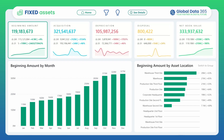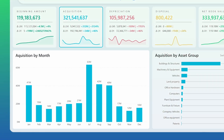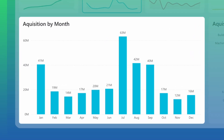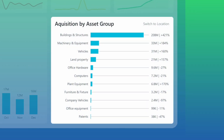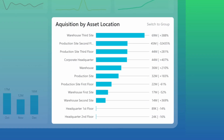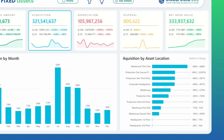Moving on to acquisition, the monthly trend reveals asset purchase volumes over time. The asset group view shows where capital is being directed the most, along with the asset locations.